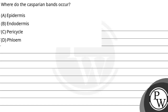Hello, let's read this question. The question says, where do the Casparian bands occur? Option A: epidermis. Option B: endodermis. Option C: pericycle. And option D: phloem.